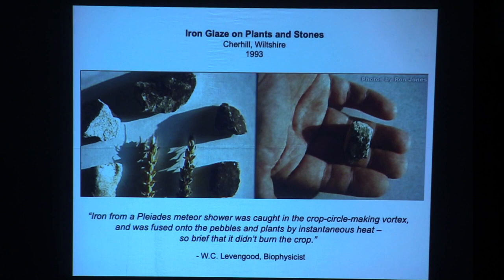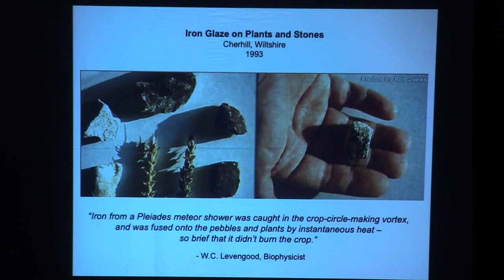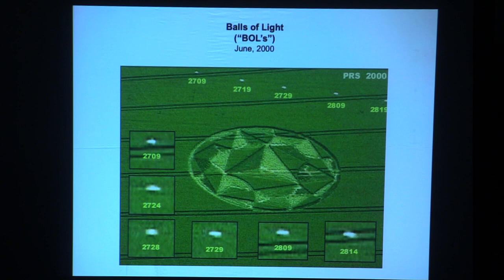In another case, both plants and pebbles were coated with iron in the formation — so brief that it didn't burn the crop. Leavengood of BLT thinks it was iron from a Pleiades meteor shower that was caught in the crop circle making vortex, whatever it is up there directing the information down to the field and creating the formations. There was a meteor shower right at that time.